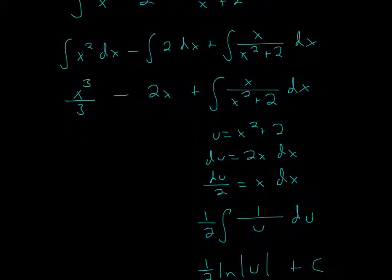I'm representing all of that in the new integral. Because 1 half times du is the same as du divided by 2. And then x dx, that is x dx. And then the last thing was x squared plus 2, which I'm representing by u.